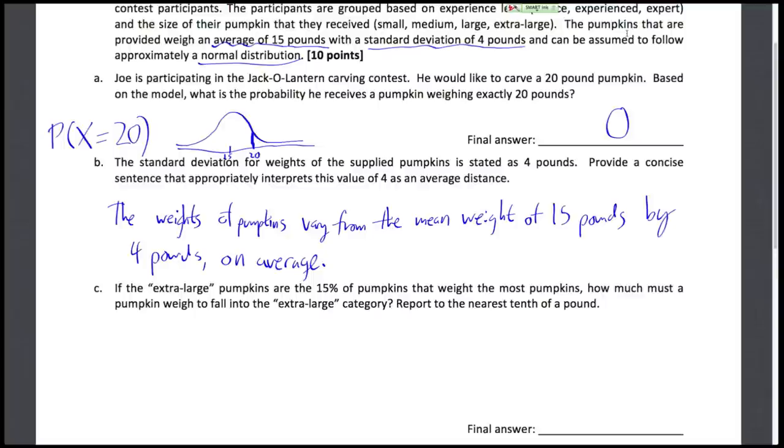So first off, you need to say where the mean is. So we need to specify that this average distance is average distance from the mean weight of 15 pounds. You can't just say that values vary from the mean by, or values vary by about 4. 4 from what? You need to have some point of center here.